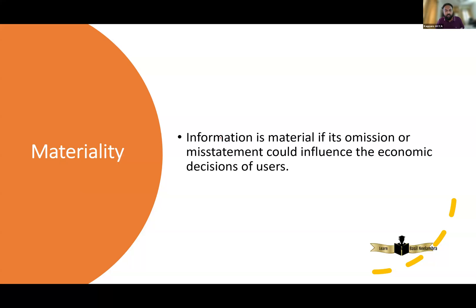There is one more word always related to relevance, and that word is materiality. Information is material if its omission or misstatement could influence the decision of users. Again, we are discussing the economic decision of users. If that information is omitted or if there is a mistake, it will definitely affect the economic decision of users — then it is material. Materiality is part of the relevance principle.